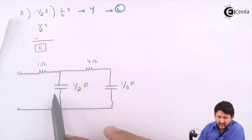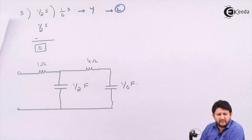So you can draw it in ladder form. That was your Cauer Form 1. Let's have a look at Cauer Form 2 in the next question. Thank you.